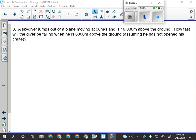So we have a skydiver who jumps out of a plane moving at 90 meters per second and is 10,000 meters above the ground. How fast will the diver be falling when he is 8,000 meters above the ground, assuming he has not opened his chute? Essentially meaning there's no friction and energy is conserved between 10,000 meters and 8,000 meters. Let's see if we can give that one a try.